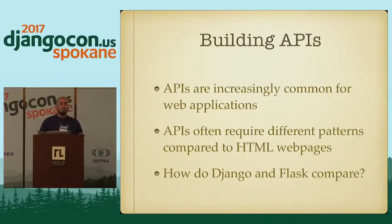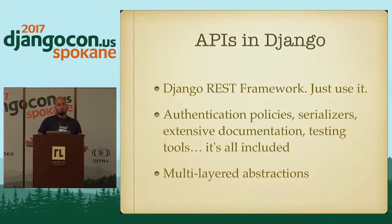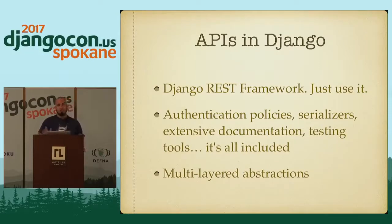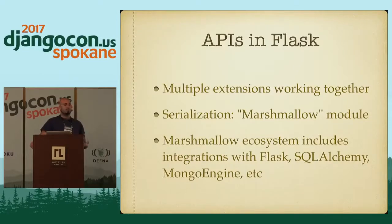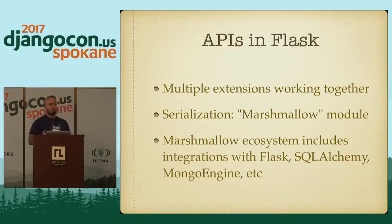Another thing many websites need is APIs — increasingly common for web applications, with different usage patterns compared to HTML web pages. With Django, you want to use Django REST Framework — it's great, with multi-layered abstractions, tons of documentation, and it works great. With Flask, as you might imagine, you use multiple different extensions working together. The core of DRF is the serializer; in Flask, you'd probably use the Marshmallow module, which is a serializer framework. The ecosystem has integrations with Flask, SQLAlchemy, MongoEngine, and many other things — so whatever structure you've decided for your web app, Marshmallow will work with it.